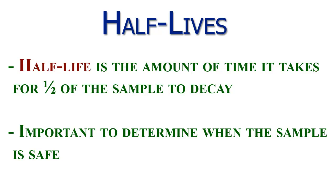What they do is basically get a sample of a particular isotope — let's say uranium. They determine how long it takes half of that sample to decay, and they call this the isotope's half-life. They give it the symbol T½, because in chemistry you need to give everything symbols.